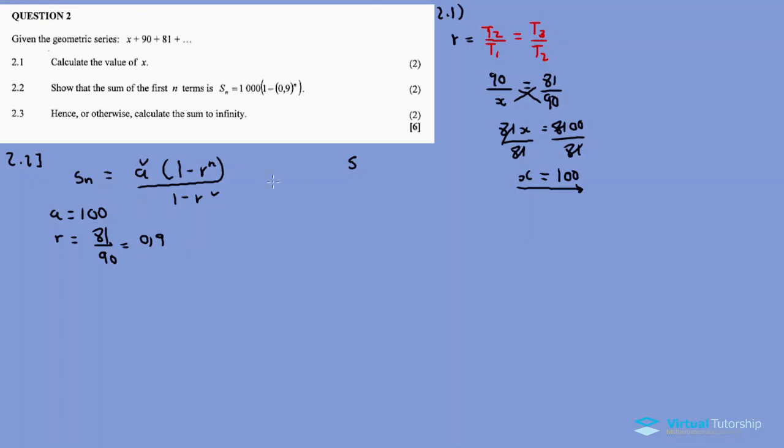Sn equals a which is 100 times 1 minus 0.9 to the n close bracket divided by 1 minus 0.9. Sn equals 100 times 1 minus 0.9 to the n divided by 0.1.